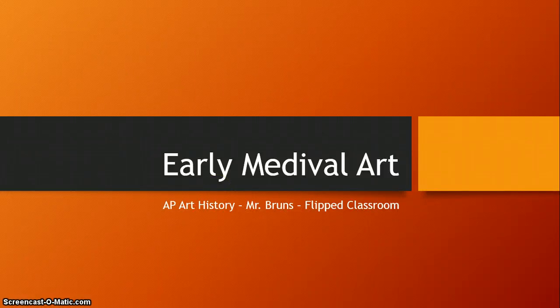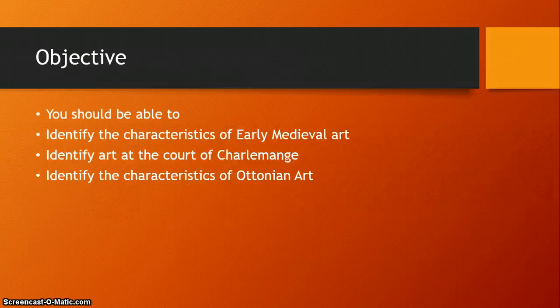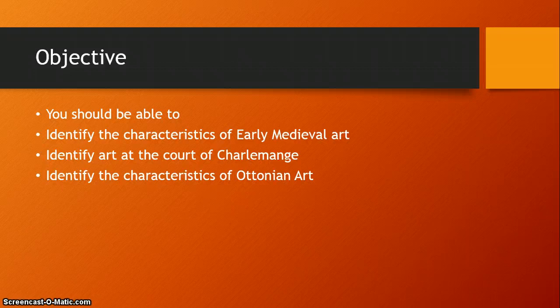Hi guys, it's time for a flipped classroom discussion. This is AP Art History. I'm Mr. Bruns and today we're going to begin early medieval art — this will be one of several video classroom lectures on this time period. Our objective throughout these videos is that you should be able to identify the characteristics of early medieval art, identify art at the court of Charlemagne, and identify the characteristics of Ottonian art. For this video, we're going to be looking at the characteristics of early medieval art, and we'll follow with other videos for Charlemagne and Ottonian art.